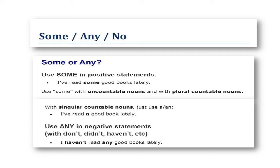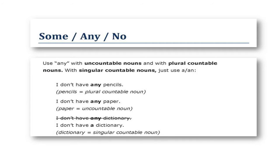Use any in negative statements, with don't, didn't, haven't, etc. I haven't read any good books lately. Use any with uncountable nouns and with plural countable nouns. With singular countable nouns, just use a or an.